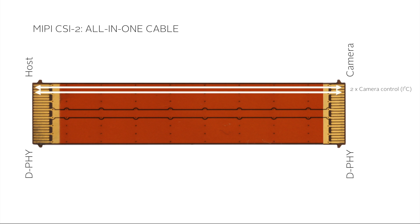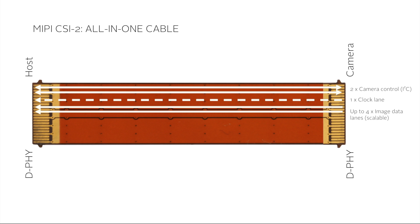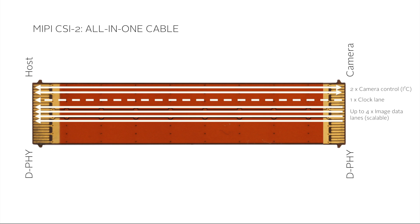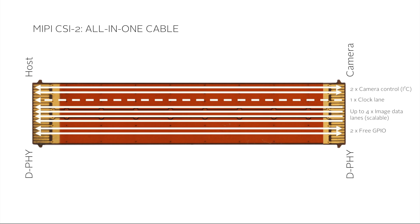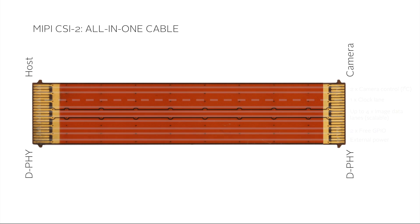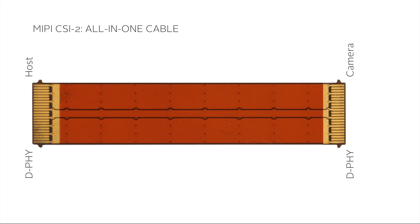Two general-purpose inputs/outputs running as I2C for camera control, one MIPI CSI2 clock lane, four MIPI CSI2 image data lanes, two free general-purpose inputs/outputs — for example for external trigger signal or peripheral control — and an external power supply at five volts. So MIPI CSI2 bundles all functions within one flex cable, with no need for additional cabling for power supply or triggering.